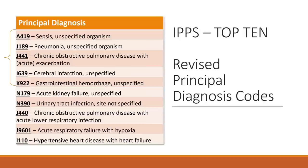Now we'll move on to the top five revised principal diagnosis codes for inpatient. The most commonly changed principal diagnosis is A41.9 sepsis — not a surprise. Then we have J18.9 pneumonia, J44 COPD, I63.9 cerebral infarction, and K92.2 gastrointestinal hemorrhage. The GI hemorrhage was surprising. These are your top ten most commonly changed principal diagnosis codes, which you can use for auditing or education. We're going to concentrate on the first five and dig into the problems behind these changes.